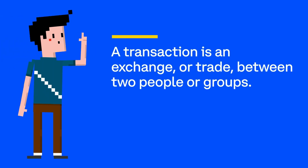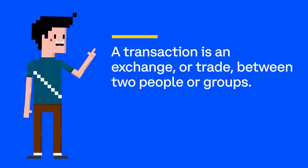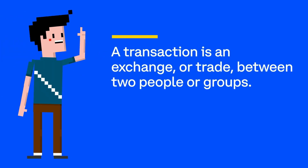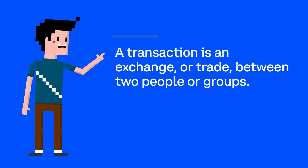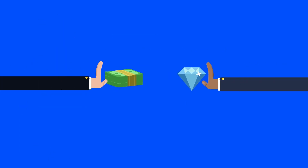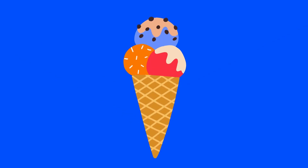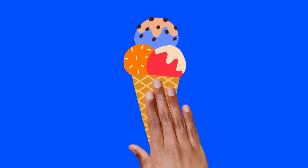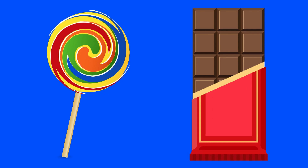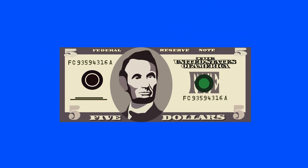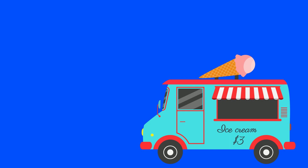A transaction is an exchange or trade between two people or groups. In a transaction, one person or group trades a good, service, or money for another good, service, or money. Buying an ice cream cone, trading a lollipop for a chocolate bar at lunch, or earning an allowance when you do your chores are all transactions.